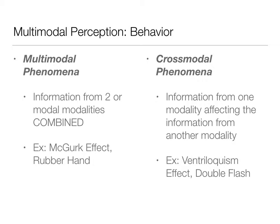We're going to talk about the distinction between multimodal phenomenon and cross-modal phenomenon. Multimodal phenomenon is what we've been talking about so far in terms of multisensory integration and the enhancement of that — multisensory enhancement — talking about the neural processes involved, when information from two or more modalities is combined. When we talked about the brain chapter, we talked about how receptive fields overlap in the same location so that we can get spatial information in a combined, integrated way.